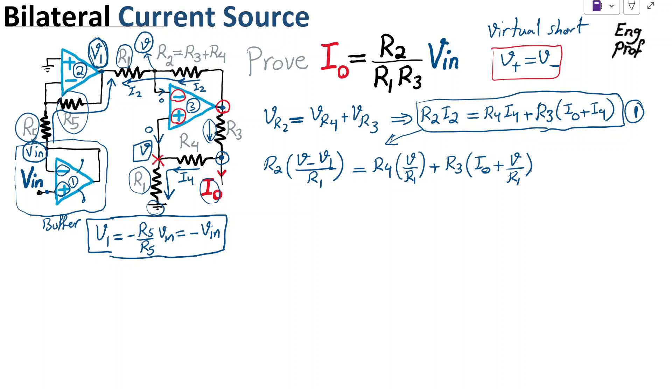Okay, so what is the nice thing about this whole process? The nice thing is I have now an equation I can deal with. So let's just expand. So if I expand, I can see it's R2 over R1 times V minus R2 over R1 times V1 equal to R4 over R1 times V, and then I have also R3 times V over R1. So it effectively becomes R4 plus R3 divided by R1 times V plus R3 times I_out, this component.